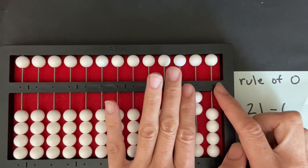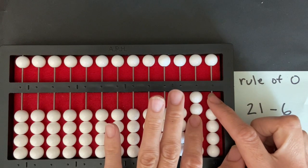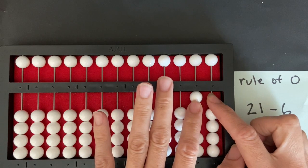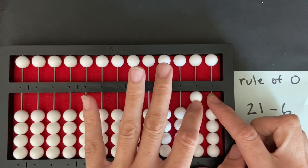Now I have to move over to the tens rod. With my left finger I push a tens bead away from the counting bar, and I count two.